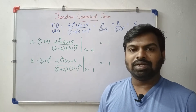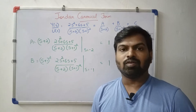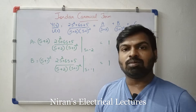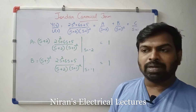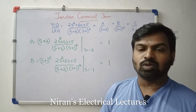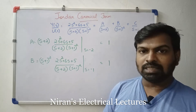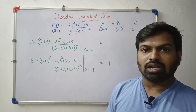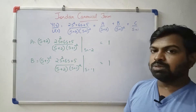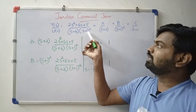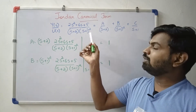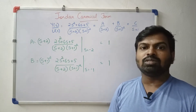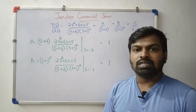Hello friends. In this video, we are going to talk about Jordan Canonical Form — specifically the Diagonal Canonical Form. The Diagonal Canonical Form is called Distinct Root form, but here we use Repeated Root as a Jordan Canonical Form.